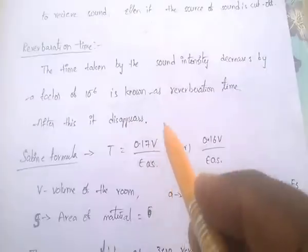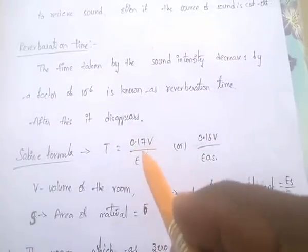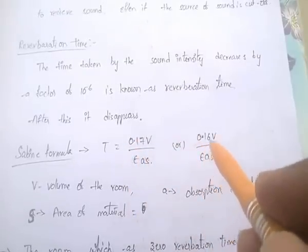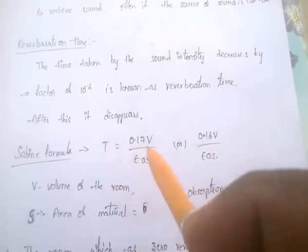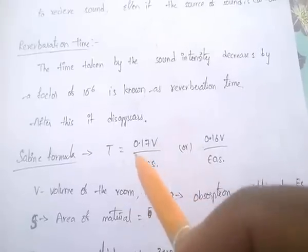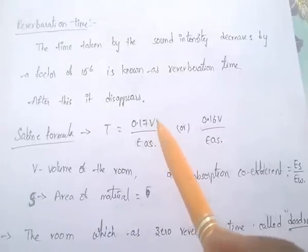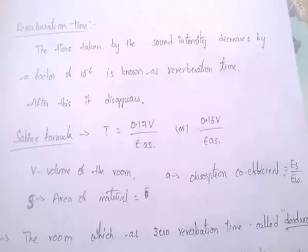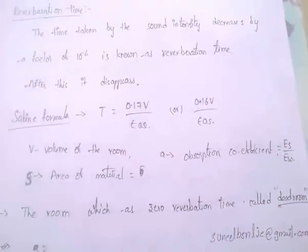Sabine has given a formula for reverberation time: T = 0.17V / ΣAs. Note that some textbooks use 0.16V — both are correct due to the small difference. Here V is the volume of the room, A is the absorption coefficient, and S is the area of the material.